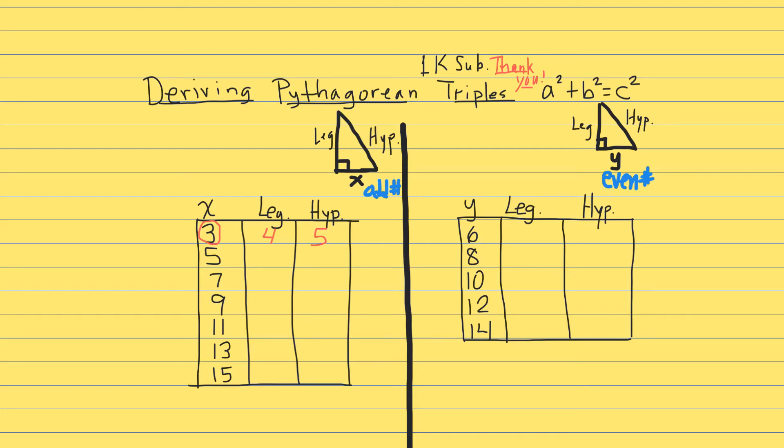The next one: let x be 5. So what we're going to do is we're going to square the 5 again. 5 squared is 25, and we split the 25 into 12 and 13. Again, 12 plus 13 is 25, which is 5 squared.